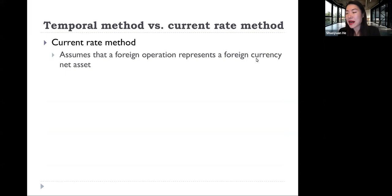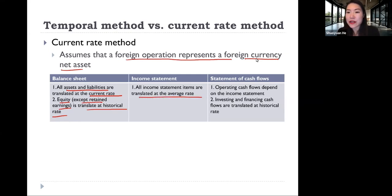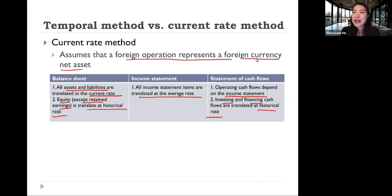Now let's look at the current rate method. The assumption here is that a foreign operation represents a foreign currency net asset. On the balance sheet, all of the assets and liabilities are translated using the current rate. Equity, except retained earnings, is translated at historic rate. For the income statement, all income statement items are translated at the average rate. On the statement of cash flows, operating cash flow depends on the income statement, while investing and financing cash flows are translated at historic rate.